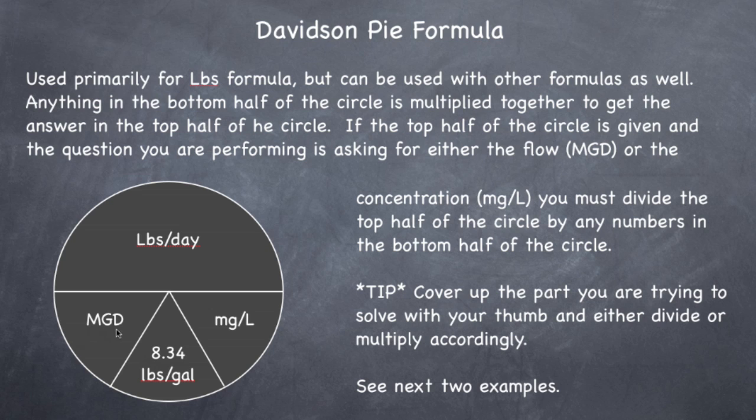In the question, they'll give you flow. I want you to put your flow in here. They're going to give you the concentration in milligrams per liter. I want you to put that in here. And then this number right here is a constant number. It won't change. Not on the grade one. And so, this number is always here, 8.34 pounds per gallon. One gallon of water weighs 8.34 pounds.